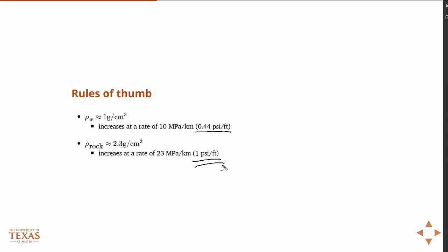So on land it's really easy to estimate what the overburden pressure is, not the pore pressure, the overburden pressure, it's really easy to estimate because it's roughly one psi per foot. So at 8,000 feet it's what? 8,000 psi.